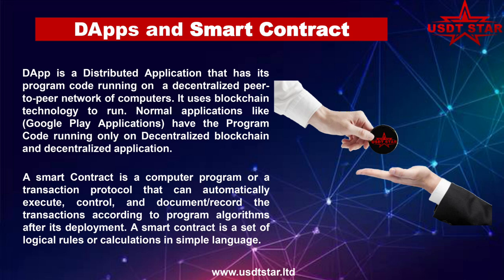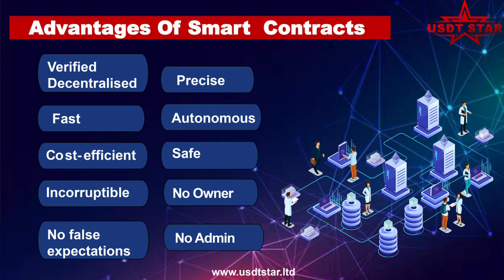Let me explain what dApps and smart contracts are. dApps, or decentralized applications, are created with coding programs and have no owner or admin — they are totally automatic and work with 100% accuracy, making them totally safe. Smart contracts are contracts developed on the blockchain that support the automation of all decentralized applications. The advantages of smart contracts include: verified, decentralized, fast, cost-efficient, incorruptible, no false expectations, no admin, no owner, totally safe and secure, autonomous, and precise.